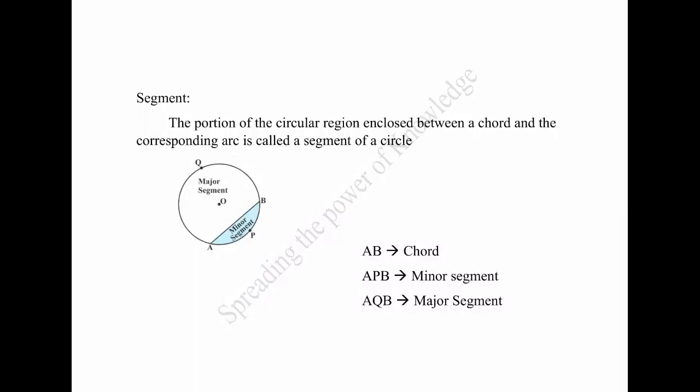Segment: the portion of the circular region enclosed between a chord and the corresponding arc is called a segment of a circle. See the figure. AB is a chord of the circle with centre O. So, shaded region APB is a segment of a circle. APB is called the minor segment and AQB is called the major segment.